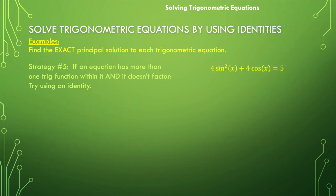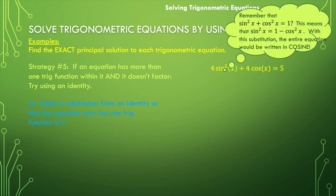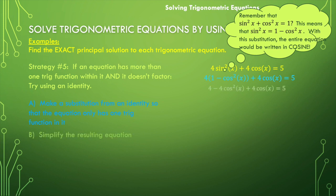Last example. Can you tell me without even looking what we would do here? We would take that sine squared of x and replace it with one minus cosine squared of x. So we have four times one minus cosine squared of x plus four times the cosine of x is equal to five. Distribute that four through: four minus four cosine squared of x plus four cosine of x is equal to five. Rearrange so the cosine squared term is in the front, and we end up with four cosine squared of x minus four cosine of x plus one is equal to zero.